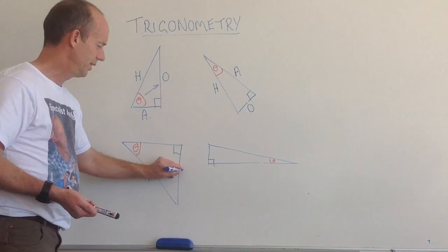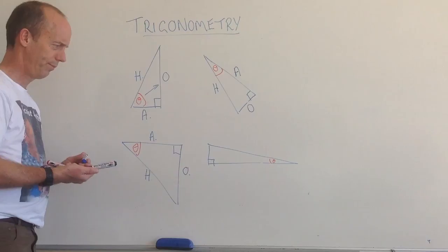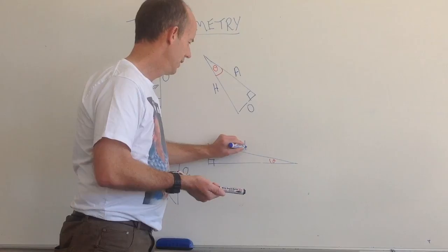Here, my longest side is now on this side. Down here, opposite the right angle. The side opposite the angle is here. And my longest side will be here.